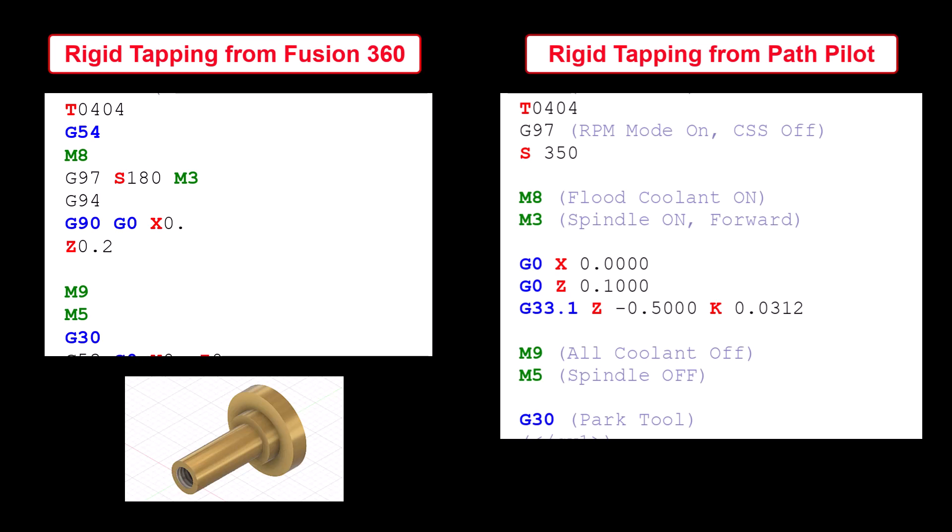So what I ended up doing is creating the G-code for the rigid tapping operation in the Tormac PathPilot software using the PathPilot conversational programming. The resulting G-code from the PathPilot software is displayed on the right above. Notice that it is quite different from the tapping code from the Fusion 360 software. In particular, the line beginning with G33.1 is the Tormac code to generate the rigid tapping operation.